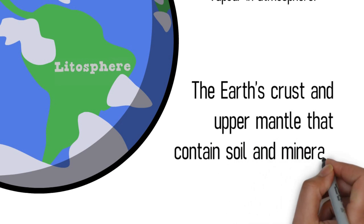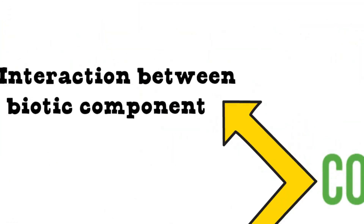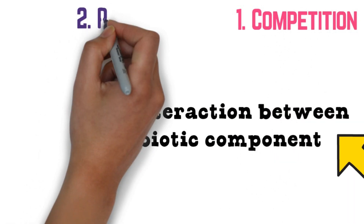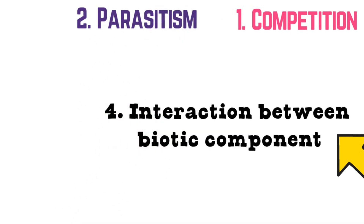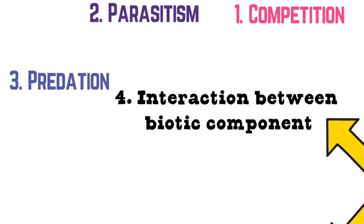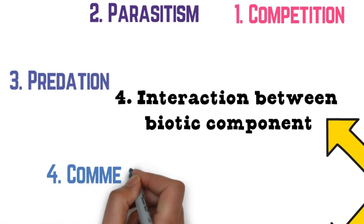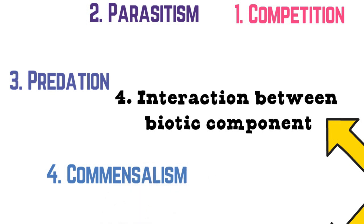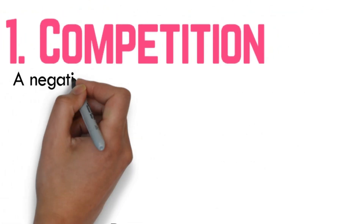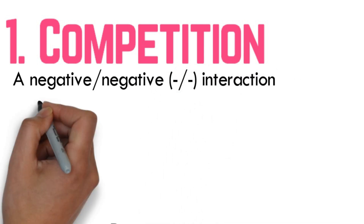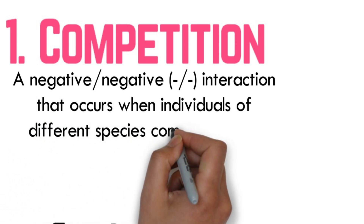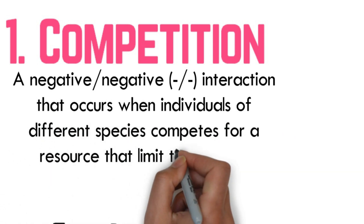The last component in the ecosystem we will discuss today is interaction between biotic components. It can be divided into five important types: competition, parasitism, predation, commensalism, and mutualism. The first is competition. Competition is a negative interaction that occurs when individuals of different species compete for resources that limit the survival and reproduction of each species.